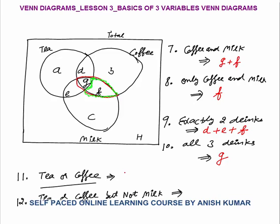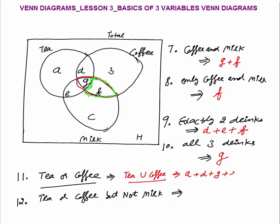When I say tea or coffee, it simply means tea union coffee. Union means you have to include all the elements in both the circle of tea and coffee — that is A plus D plus G plus E plus B plus F. All the people in the tea as well as the coffee circle will be counted: A, E, D, G, B and F.